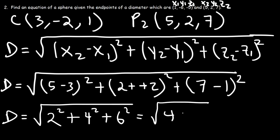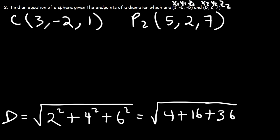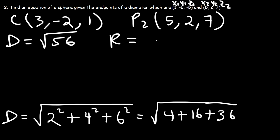2 squared is 4. 4 squared is 16. 6 squared is 36. 36 plus 4 is 40. And 40 plus 16 is 56. So the distance between the center and point P is the square root of 56. Therefore, r is the square root of 56.